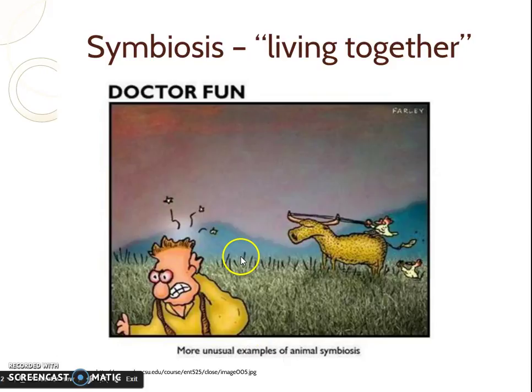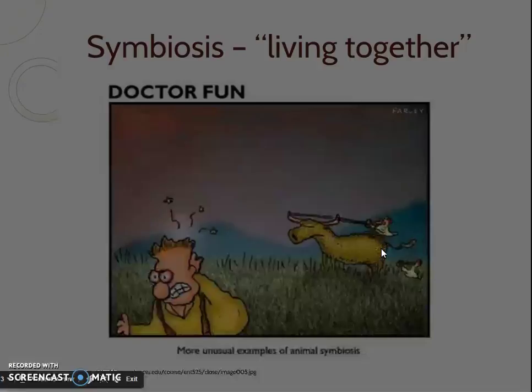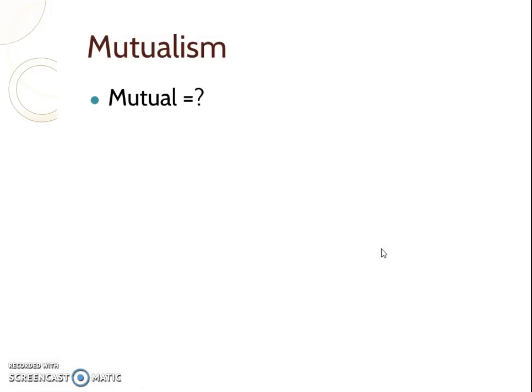This is an old comic that used to be called The Far Side — you can see animals working together. We've got three types of long-term relationships. Somebody has to benefit from every long-term relationship or they'll leave — they won't maintain a long-term relationship. If both organisms are being harmed, they'll move apart. So remember, somebody is going to be benefited from every one of these interactions.